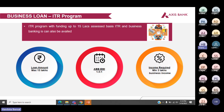Next is the ITR program. Here the loan is offered on the basis of the income tax returns of the borrowers. Maximum loan amount offered is 15 lakhs. The ABB to EMI ratio is 1.5:1 and we need a minimum 3 lakhs of business income.